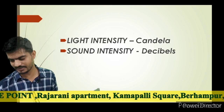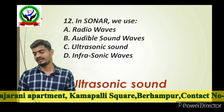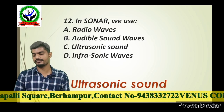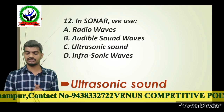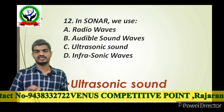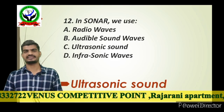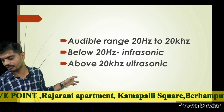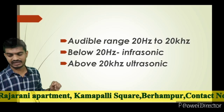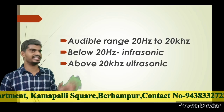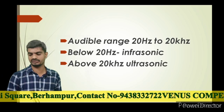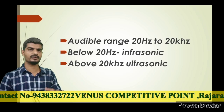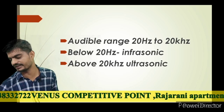Which unit is used to measure light intensity? The decibel unit is for sound intensity. Next question: in SONAR, we use ultrasonic sound waves. SONAR stands for Sound Navigation and Ranging. The audible range of sound is 20 Hz to 20 kHz. Below 20 Hz is infrasonic; above 20 kHz is ultrasonic.